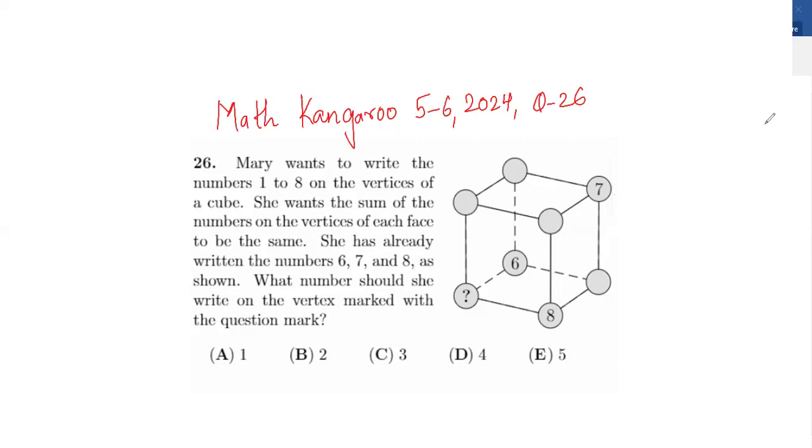She has already written the numbers 6, 7, and 8 as shown. What number should she write on the vertex marked with the question mark?